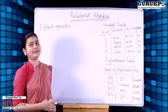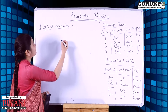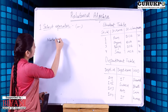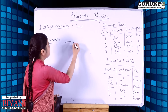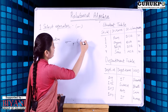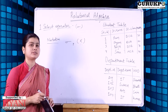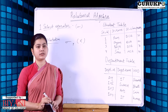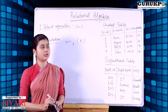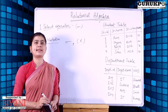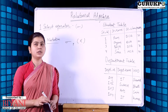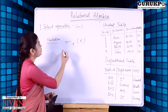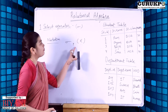The first operator is the select operator. The notation for the select operator is sigma. The expression is written as sigma_p(X). The select operator selects the tuples that satisfy a given predicate from a relation. Basically, the select operator is used to select a tuple or a row from a table based on a condition we apply.